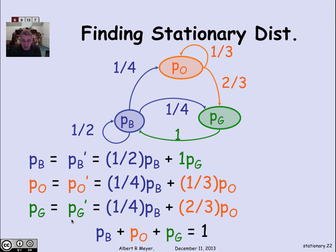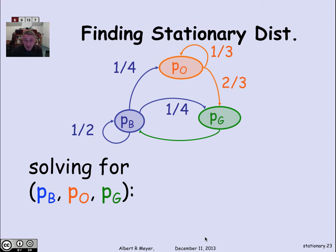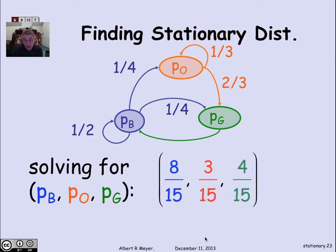As a side constraint, since you can always solve a system of equations like this trivially by setting all probabilities to 0, we add the constraint that the probabilities must sum to 1. Solving the 3×3 system gives the stable distribution: an 8/15 chance of being in state B, a 3/15 chance of being in state orange, and a 4/15 chance of being in state green. You should verify this yourself by checking the probability of being in each state after one step given these probabilities — it's worth pausing to do that arithmetic.